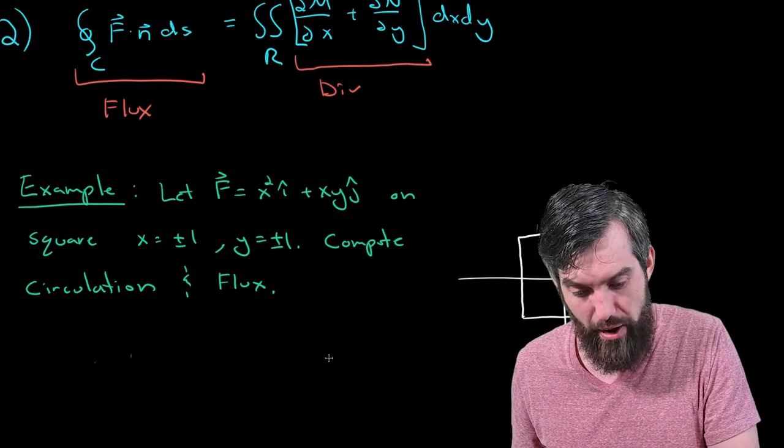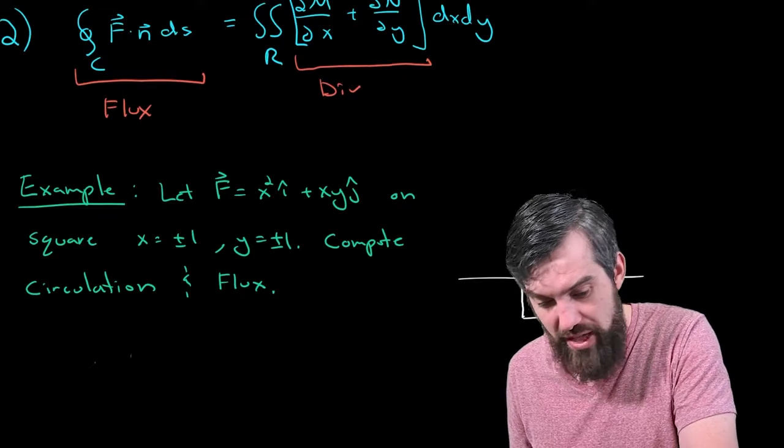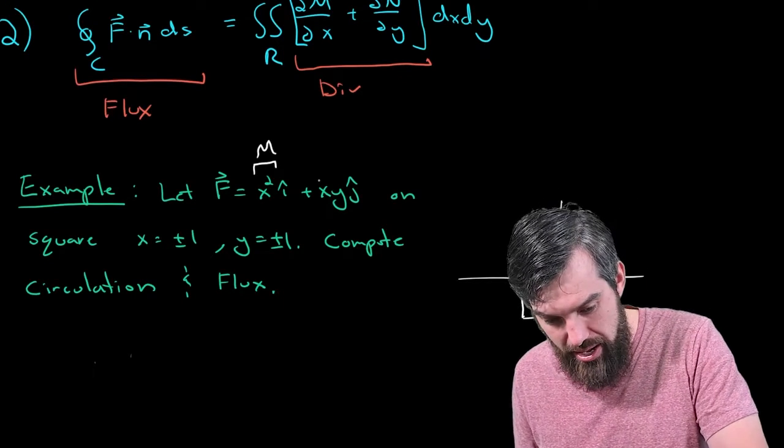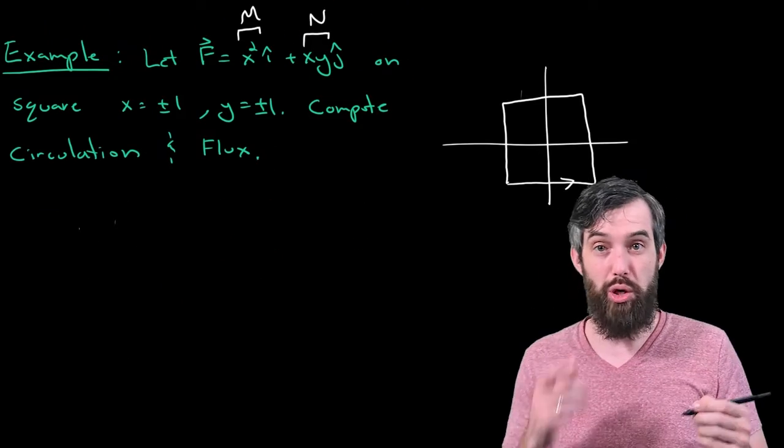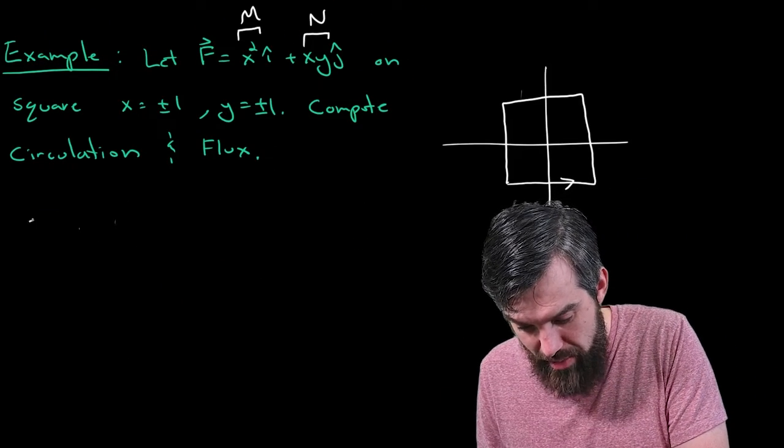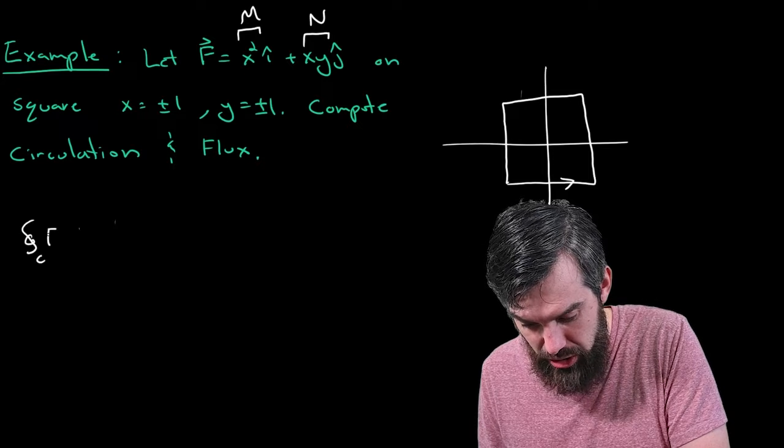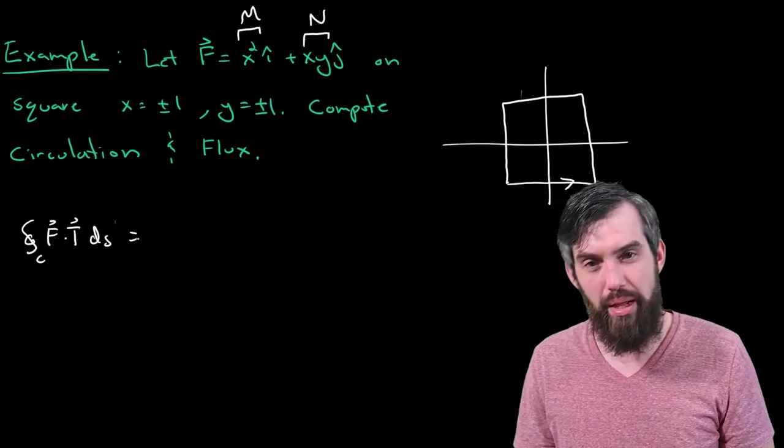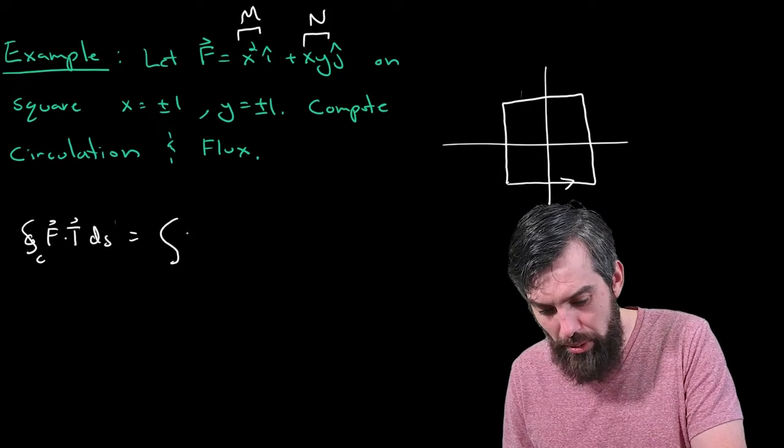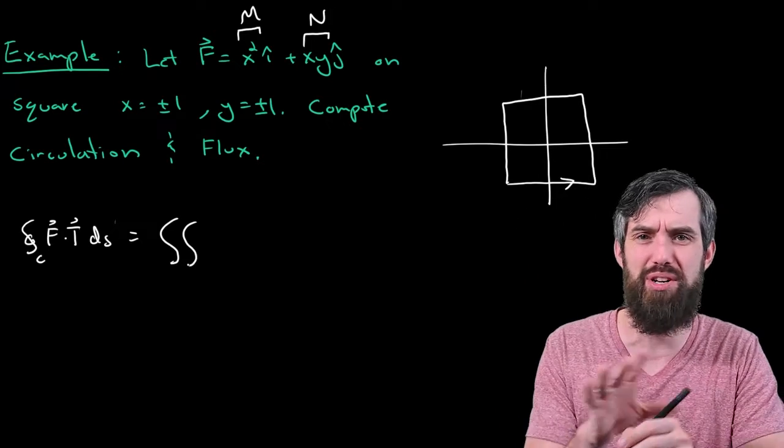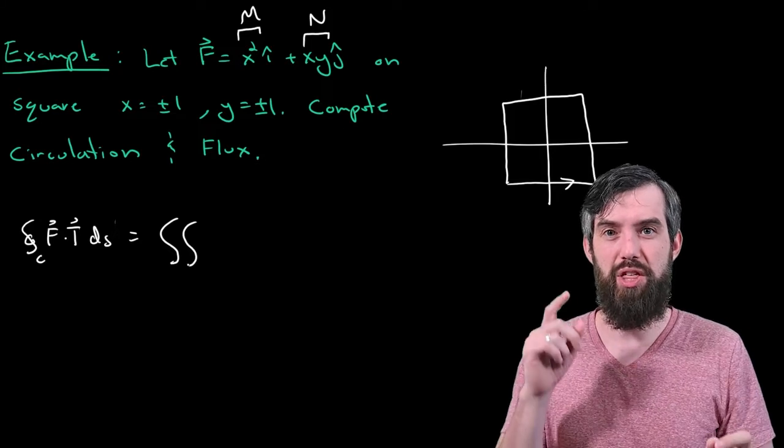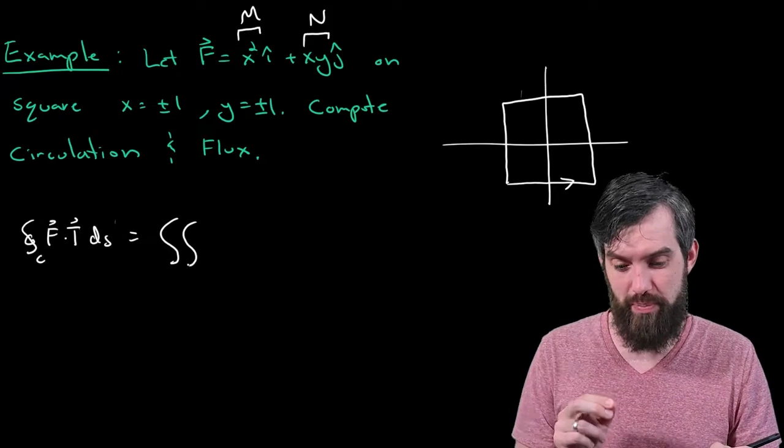Okay, so with that in my head, let's go up and look at what our field is. Well, our field, this first component is the m, and this second component is the n. So, if I'm actually going to use the theorem, then my circulation, here I'll write its line integral form down first, this is the one we're not going to be using, is going to be equal to a double integral, and I'm going to put in my limits of integration in a moment. I want to get my integrand right first.